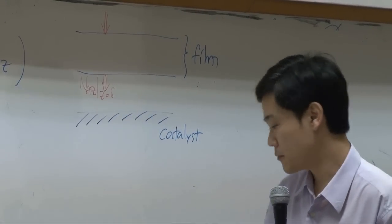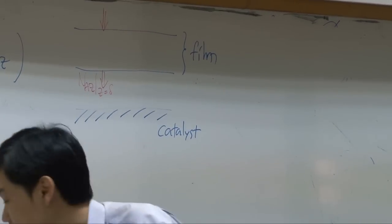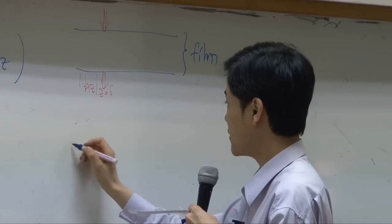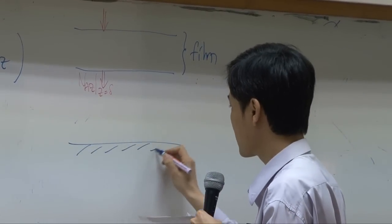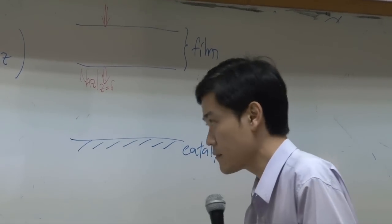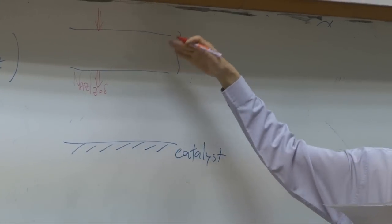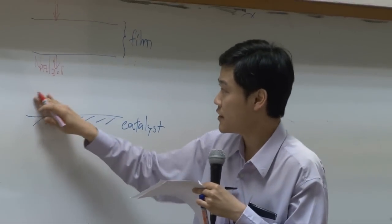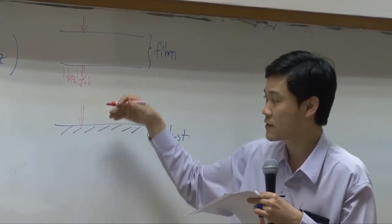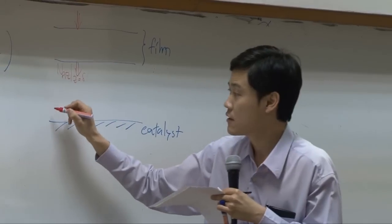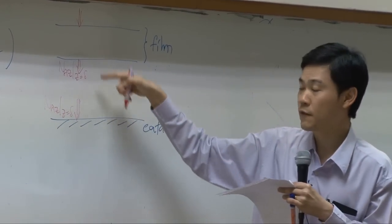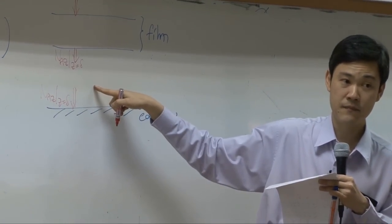If I take this apart, if I split the system, strip the film off the catalyst surface, you should see that the flux out of the film supposed to be equal to the flux going into the catalyst surface. So this is also N_A_Z as Z equal to delta. These two fluxes supposed to be the same. Okay?